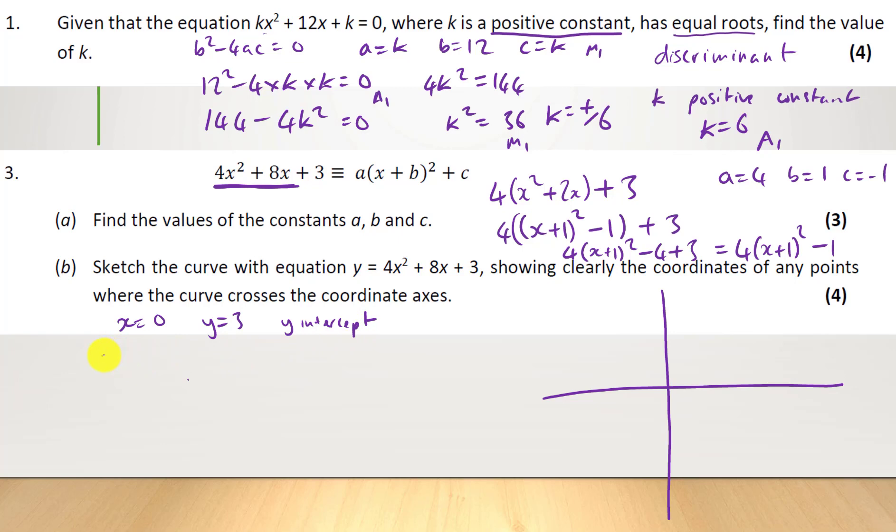Now, the minimum point is when x equals minus 1. And once that turns to 0, that means the y-coordinate is minus 1. So minus 1, minus 1.